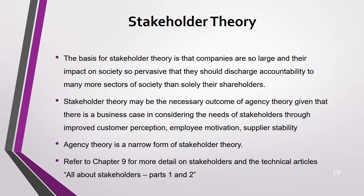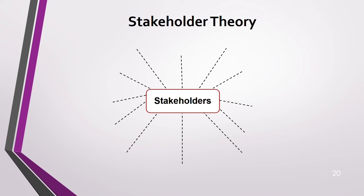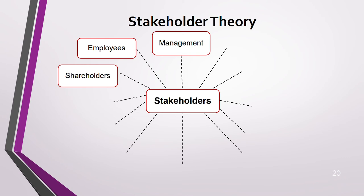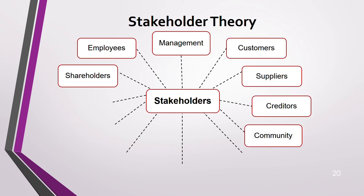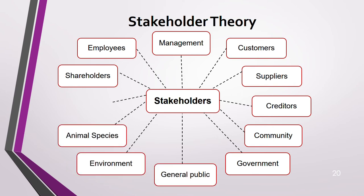For more details on stakeholder theory, refer to chapter 9 of the Kaplan textbook, and there are ACCA technical articles on stakeholders in two parts available on the ACCA website — please read both. Stakeholders include: shareholders, employees, managers, customers, suppliers, creditors, community, government, general public, environment, animal species, and future generations. In the next lecture we will study stakeholder management in detail, including power-interest matrices and Mendelow's matrix.